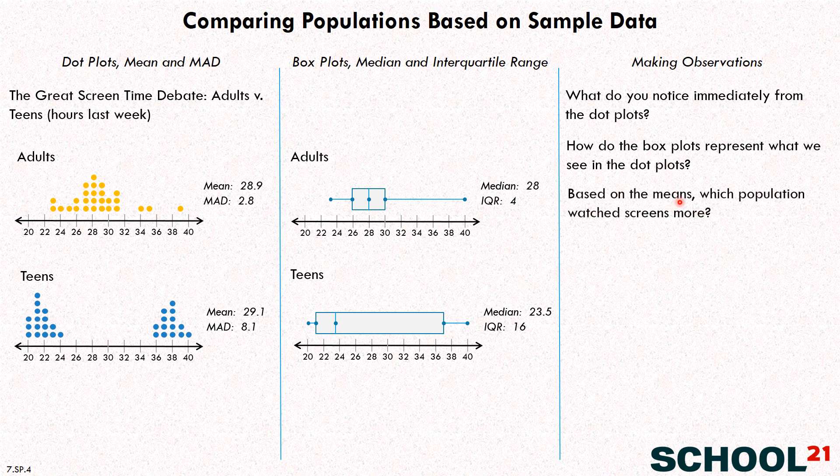First, based on the means of the two populations, which population watched screens more? Let's look over here at the mean. Adults 28.9, teens 29.1. Very close, very similar. You would have to say that teens on average watched screens more, but that it was very close. That's probably what you would describe there.